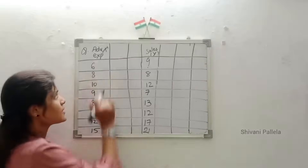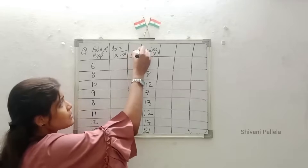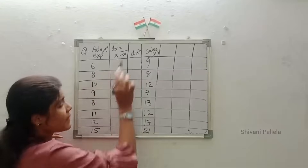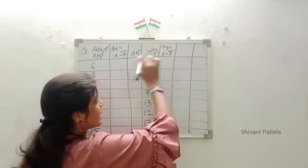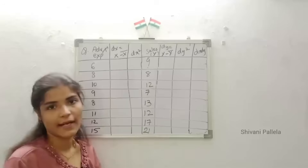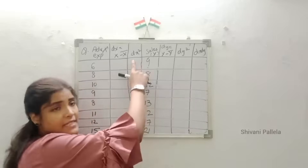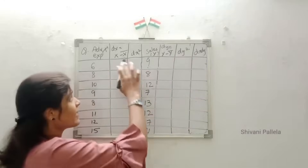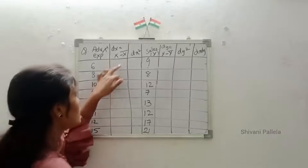After setting up X and Y, we need to build a table with the following columns: dx, dx², dy, dy², and dx·dy. To get dx, the formula is X minus X̄. To get dy, the formula is Y minus Ȳ. Then we square each to get dx² and dy², and finally multiply to get dx·dy.